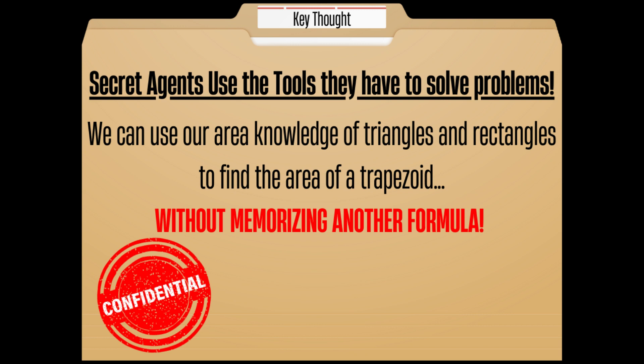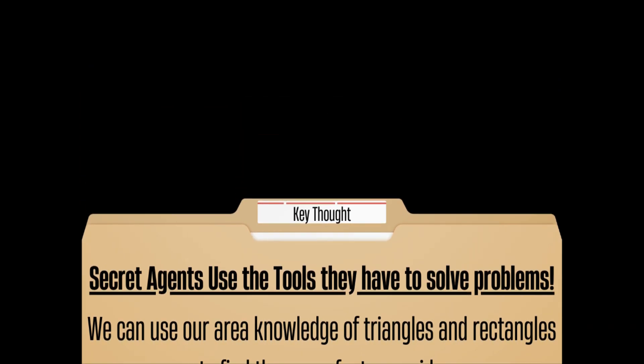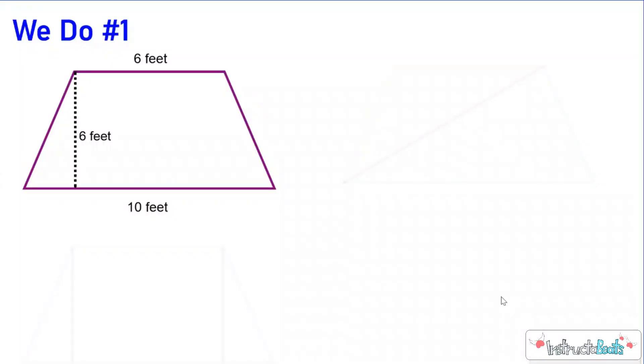So our key thought, we can use our area knowledge of triangles and rectangles to help us find the area of a trapezoid without memorizing another formula. So instead of having I do, we do, you do, we're actually going to have two we do problems together. So let's make sure we get these down in our notes.